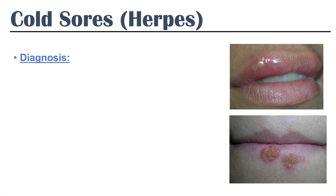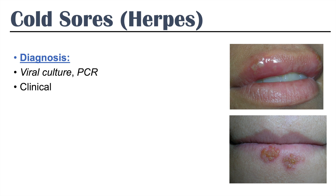How do we make the diagnosis of cold sores or herpes infection? We can do a viral culture or PCR to see evidence of the herpes simplex virus. But in actuality, almost always, there's probably going to be a clinical diagnosis.